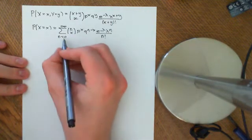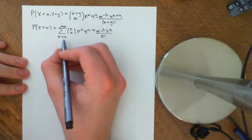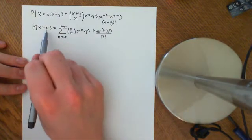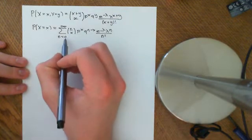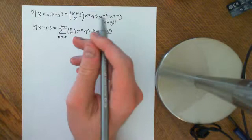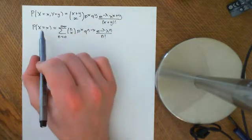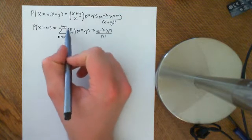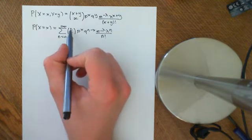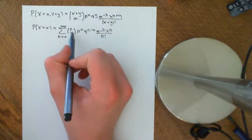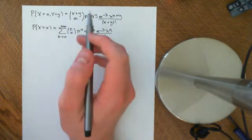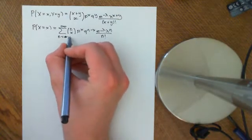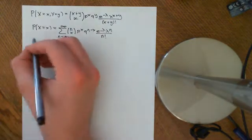Note that we could start this sum from a different number. If we're asking what is the probability that little x of them hatch, why start at N=0? If the chicken lays no eggs, then none can hatch — the probability must be 0. This is handled by N choose x being 0 when N < x, but we might as well start the sum from N=x rather than N=0.